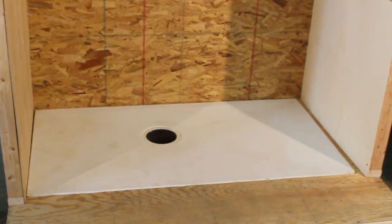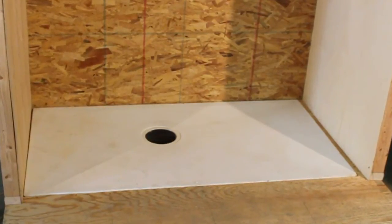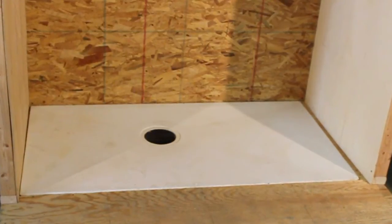Notice that the drain hole is located off-center in both directions. This pan can rotate to either miss the floor joists or get as close to the existing plumbing as possible. It's a very helpful feature of this pan.